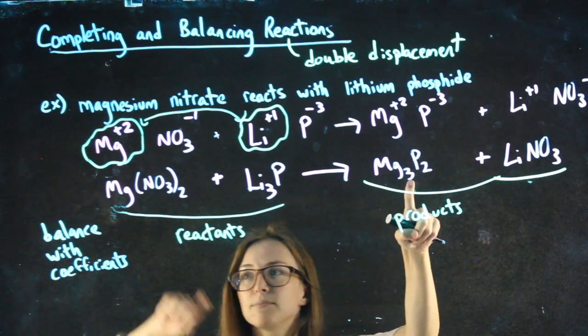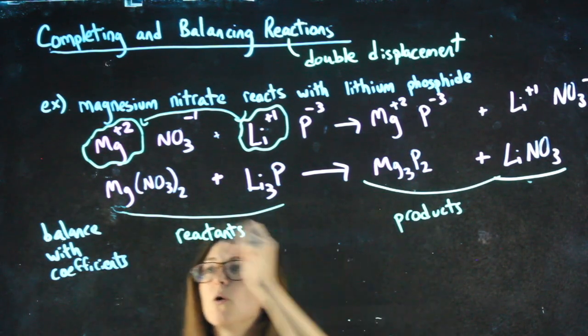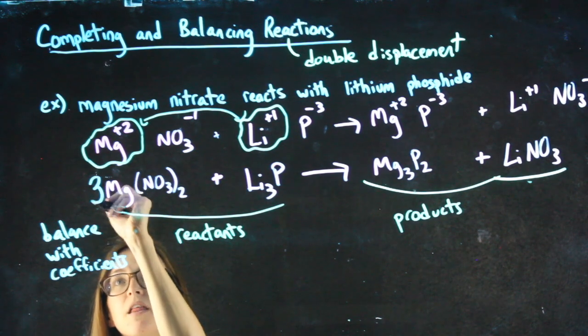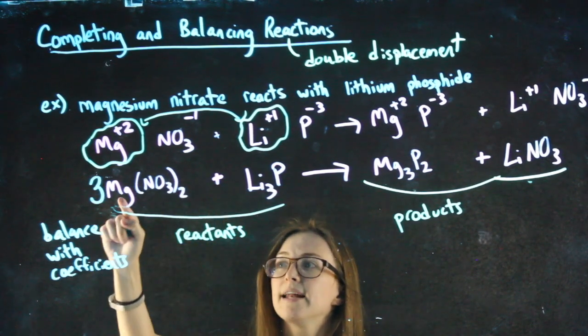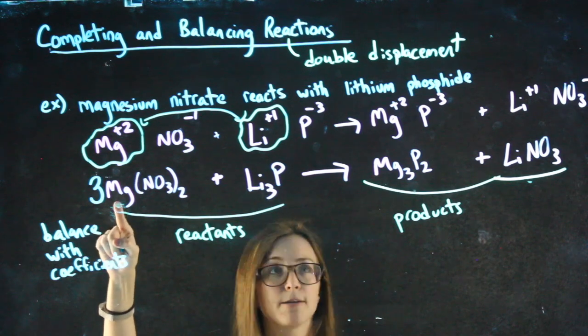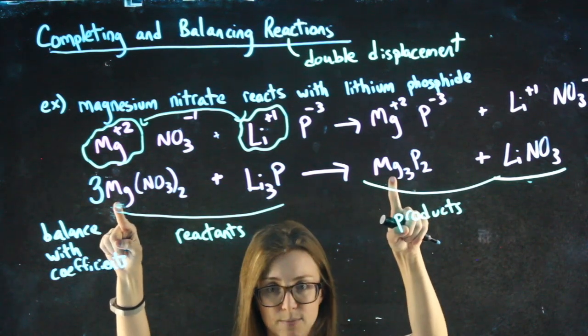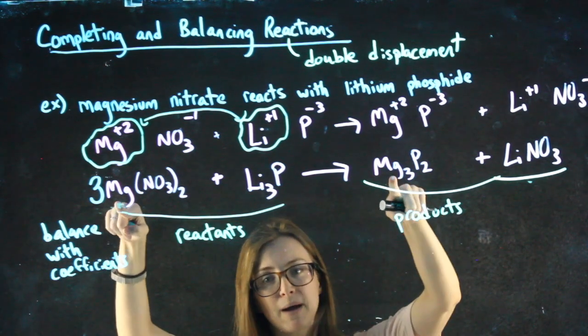So three magnesiums, one magnesium. What I would do is put a big three there that now applies to the magnesium. So now I have three magnesiums on the left and three magnesiums on the right. I've balanced the magnesium.